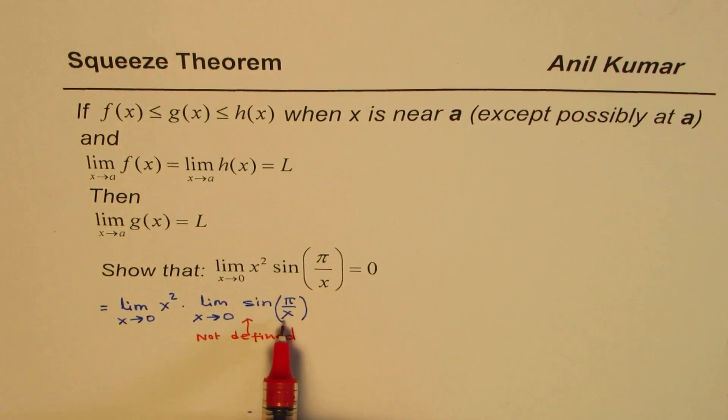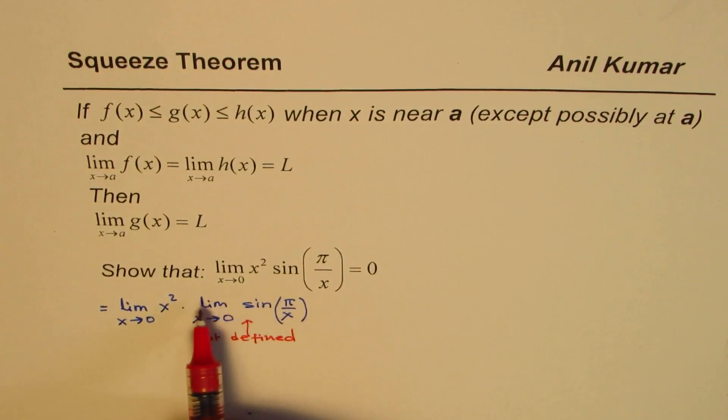then π by 2, multiple of π/2, you can see, is 1. And if x is a multiple of π, then that value is 0. So this value actually fluctuates between 0 and 1 as you move closer and closer to 0. So this limit is undefined.